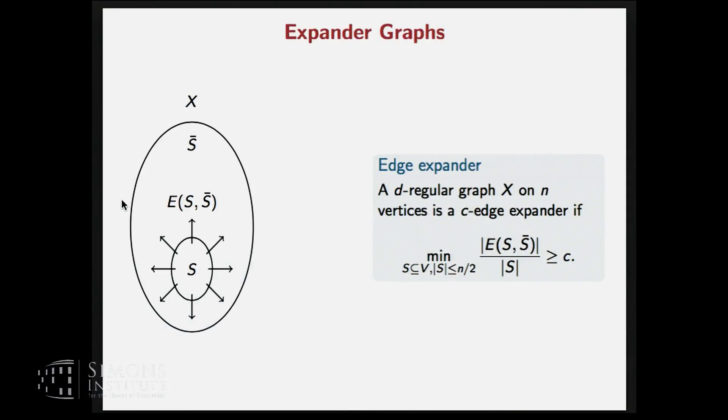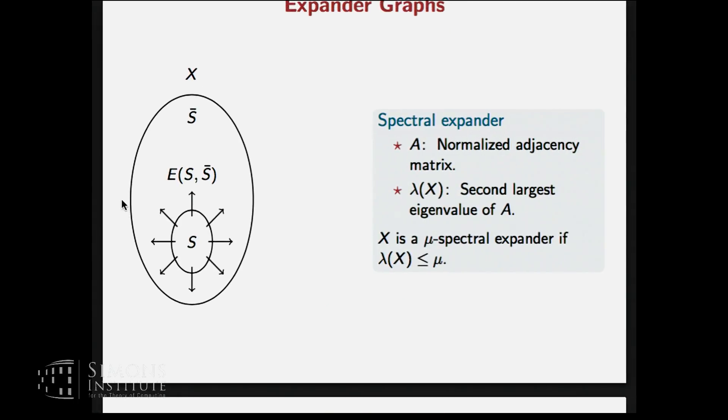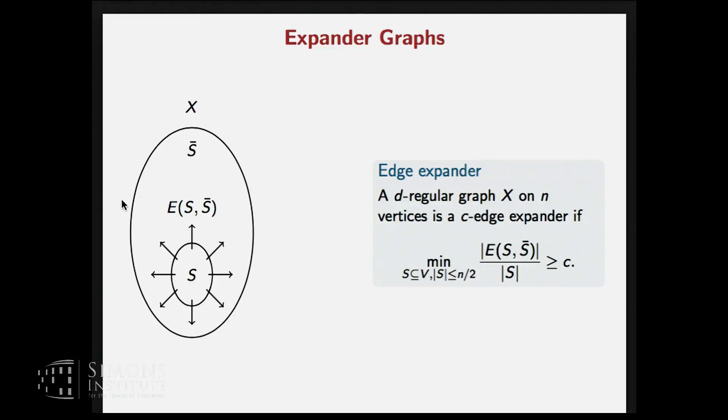So first of all, let's see what expander graphs are. These are graphs where every subset is well connected to the rest of the world. So in particular, if we take any subset S, the edges which go out of S are some constant fraction, some constant times the size of S. And this should happen for all subsets S of reasonably small size. And if this happens, we say that this graph is a C edge expander.